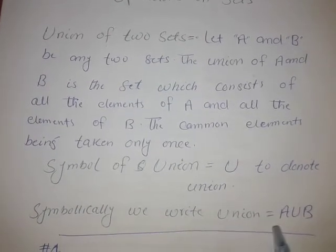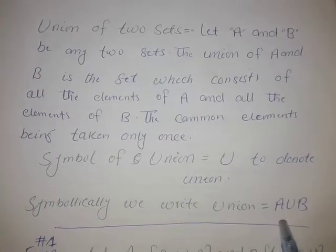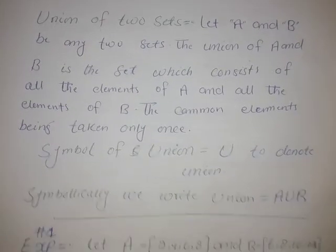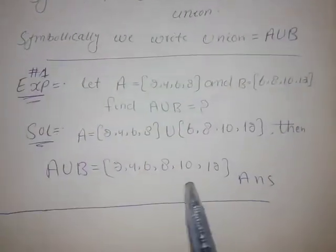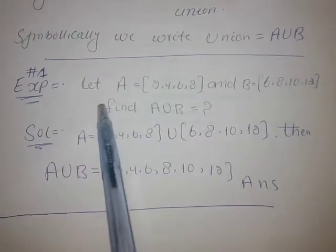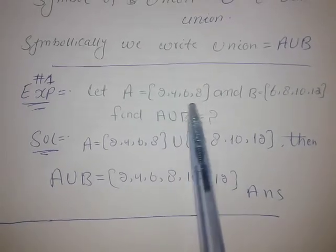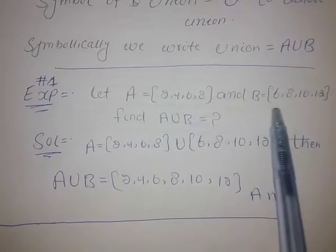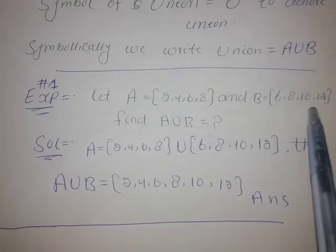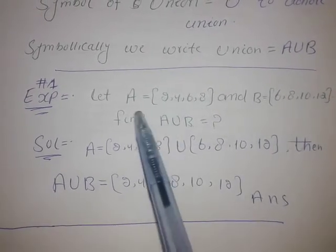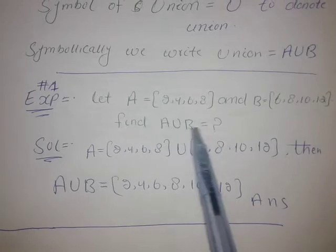Symbolically, we write A union B. For example, let A be equal to {2, 4, 6, 8} and B be equal to {6, 8, 10, 12}. Find A union B.